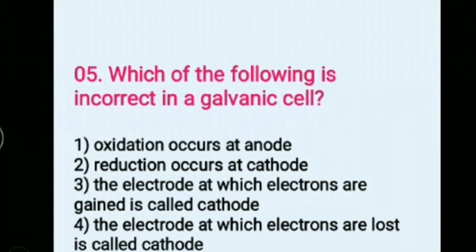Which one of the following is incorrect in a galvanic cell? Options: 1) Oxidation occurs at anode, 2) Reduction occurs at cathode, 3) The electrode at which electrons are gained is called cathode, 4) The electrode at which electrons are lost is called cathode. Answer: 4) The electrode at which electrons are lost is called cathode.